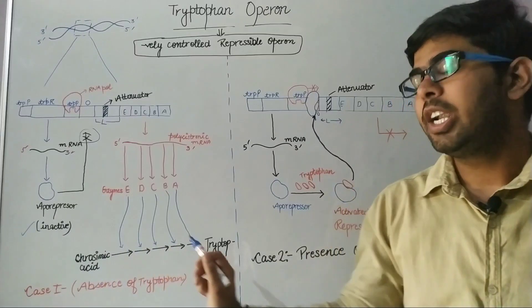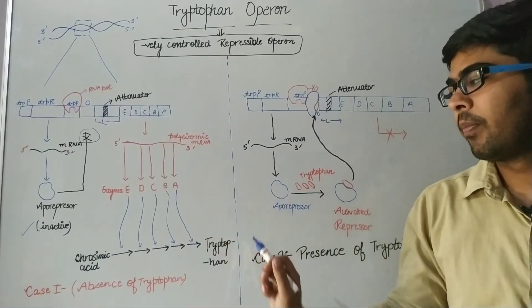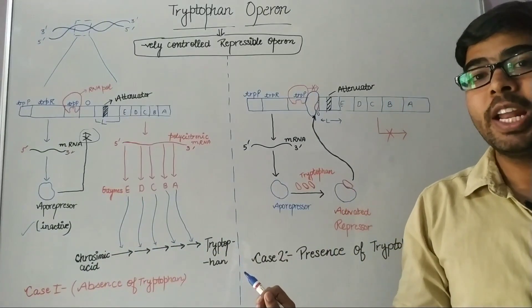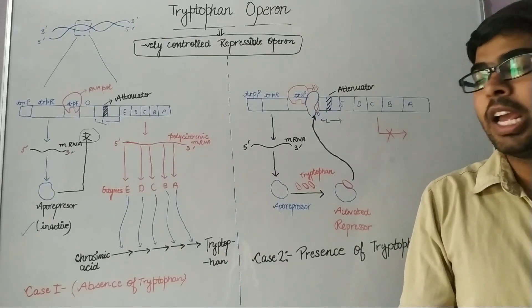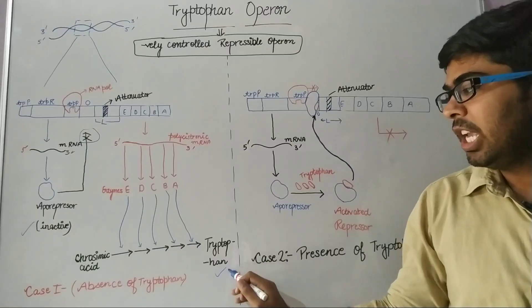This polycistronic mRNA undergoes the process of translation and produces five enzymes: E, D, C, B, and A. These enzymes will proceed the pathway which converts chorismic acid into tryptophan. In this way, tryptophan is synthesized in the cytoplasm of E. coli.